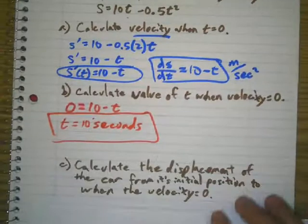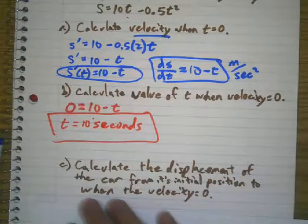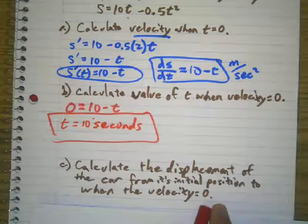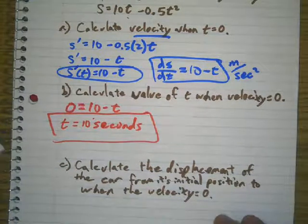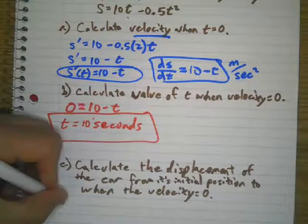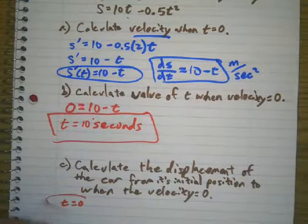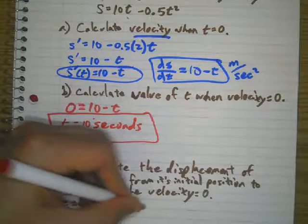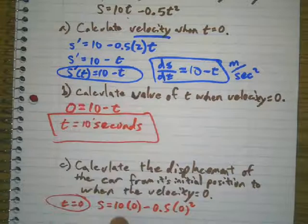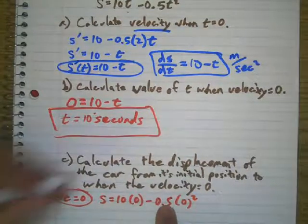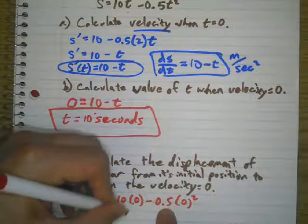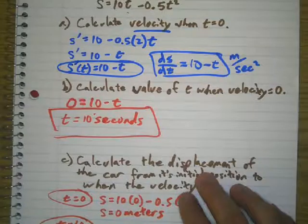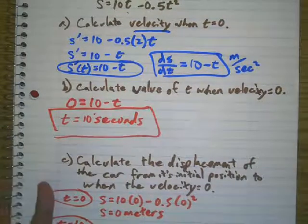Next, calculate the displacement of the car from its initial position to when the velocity is zero. Basically, they're saying from when t equals zero till when the velocity is zero, what's the distance traveled? So when t equals zero, my, where was, what was my distance traveled? s times zero minus 0.5 times zero squared. Well, where's my location at this? If I plug in zero here and zero here, my location is zero meters, right? When t equals 10, we're going to find and figure out the displacement. How far did it go from when t equals zero till when t equals 10?